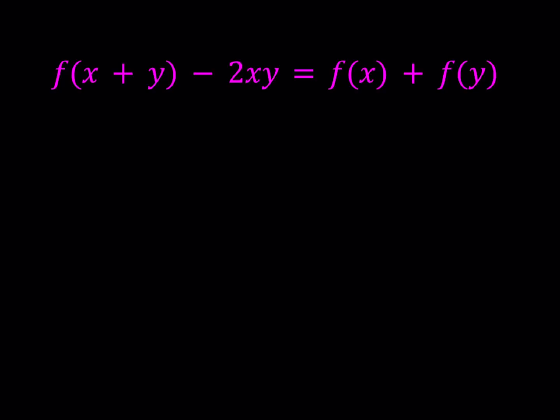We have f(x+y) - 2xy = f(x) + f(y), and we're going to be solving for f(x). I'll be presenting two methods, and the methods are very different. I forgot to say, even though it's in the thumbnail, f is a differentiable function from R to R. So from real numbers to real numbers, it is a differentiable function.